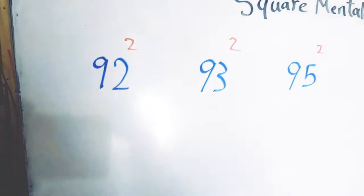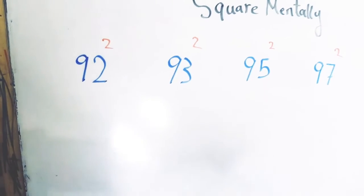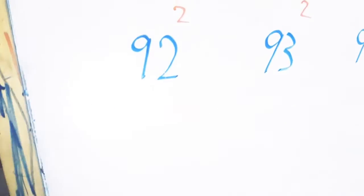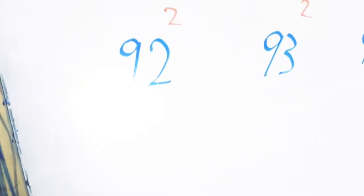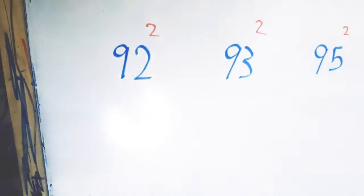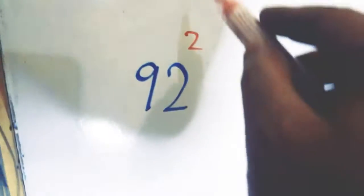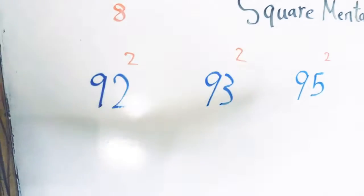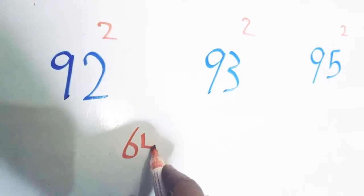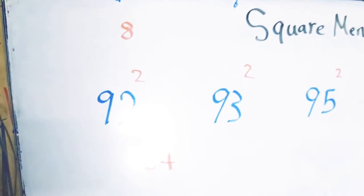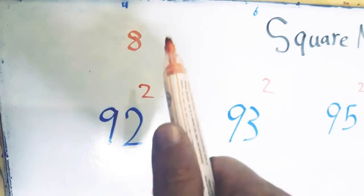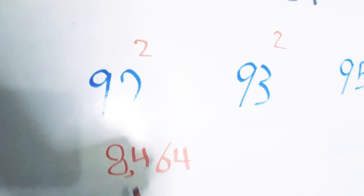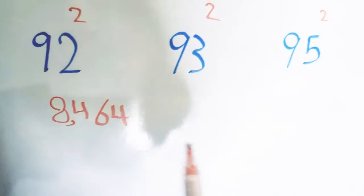Here we want to square 92. We all know that 92 is located between 90 and 100, so we can use a simple trick. We look at 92 and subtract it from 100, which gives us 8. We multiply 8 by itself: 8 times 8 equals 64. Then we subtract this 8 from 92, which gives us 84. So the answer is 8,464.